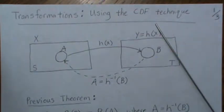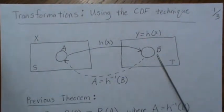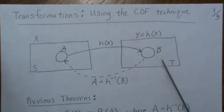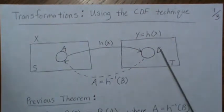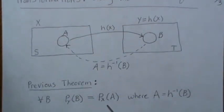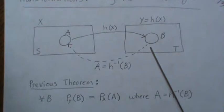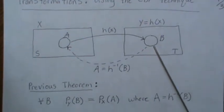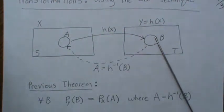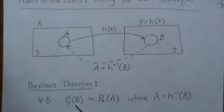The CDF technique uses the cumulative distribution function. If we set B to be the set such that Y is less than or equal to some number, that's the cumulative distribution idea. We can then find the distribution of Y in terms of X, where X is the inverse image of B. We'll fix set B so that when we find the distribution, it's really the CDF.